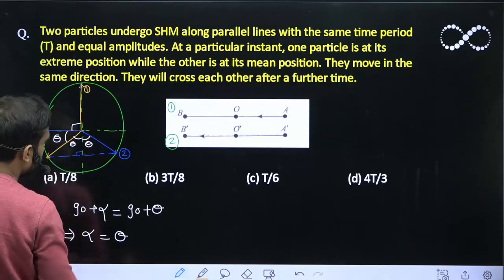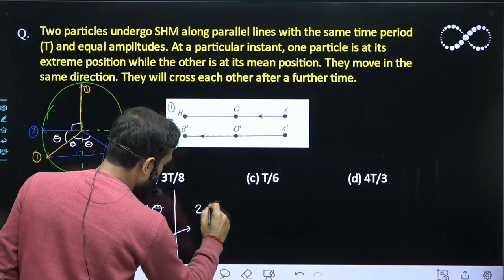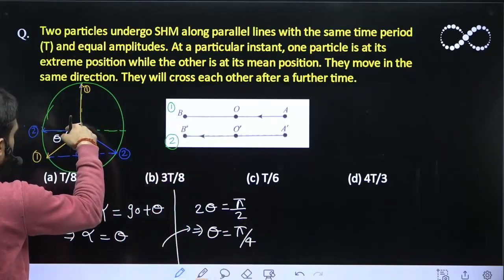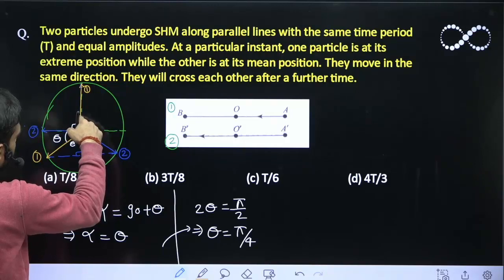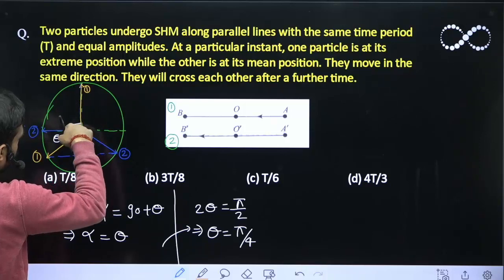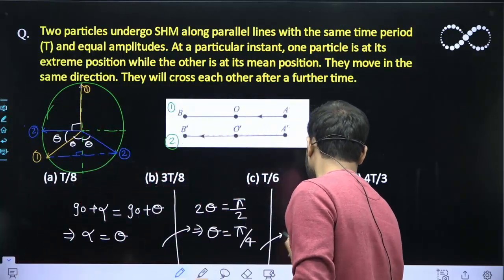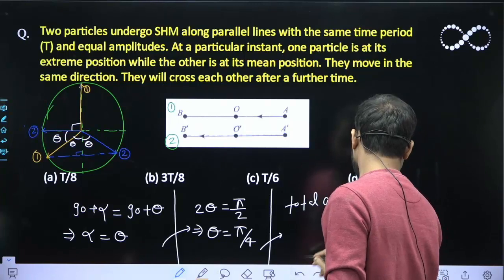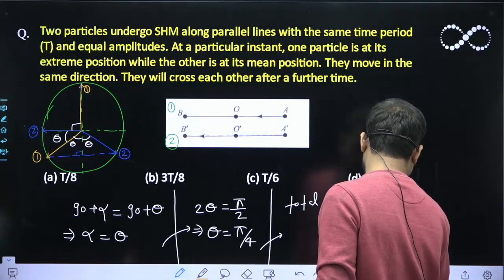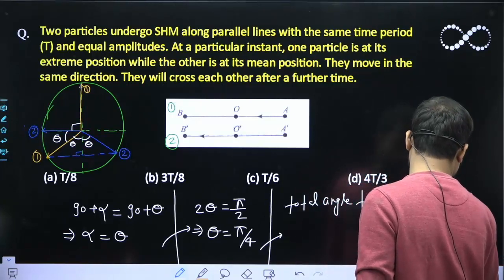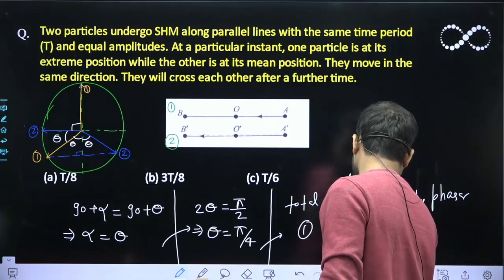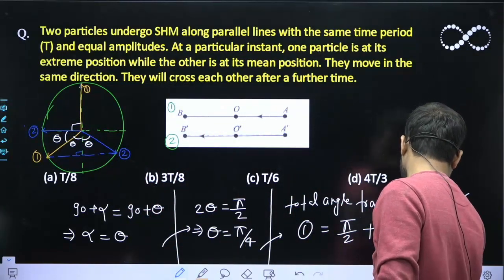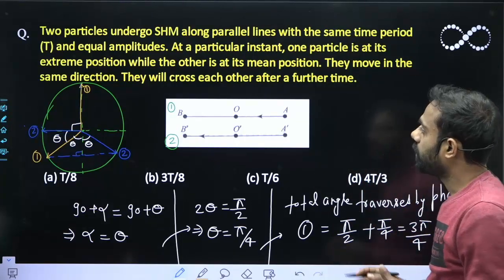Now, theta plus theta equals 90 degrees, so 2 theta equals pi by 2, which implies theta equals pi by 4. The total angle traversed by phasor 1 is pi by 2 plus pi by 4 — because this angle is pi by 2 and theta is pi by 4 — so that becomes 3 pi by 4.